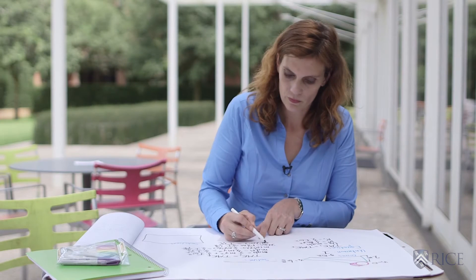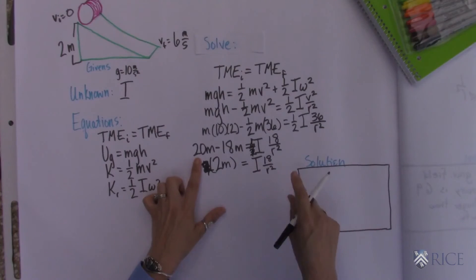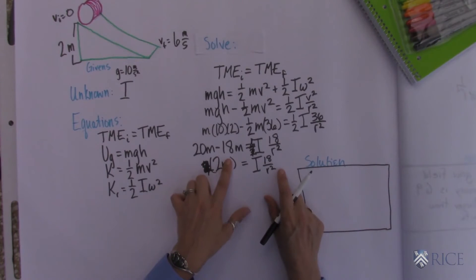Oh no. We don't need that 1 half because we already canceled it. Okay. So we get 20m minus 18m is equal to i, which is what we're looking for right here, times 18 over r squared.